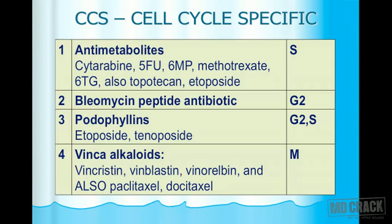Bleomycin (peptide antibiotic) acts on G2 phase. Podophyllins — etoposide and teniposide — act on G2 and S phases, so they have a mixed action. Vinca alkaloids are spindle poisons affecting M phase (mitosis); these include vincristine, vinblastine, vinorelbine, and also paclitaxel and docetaxel. These are the cell cycle specific drugs.